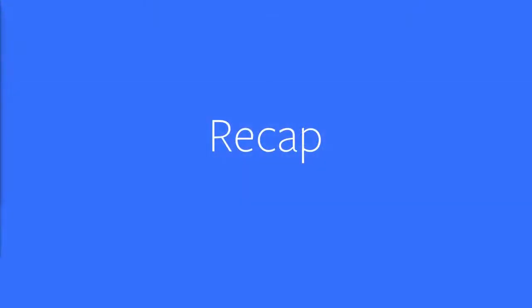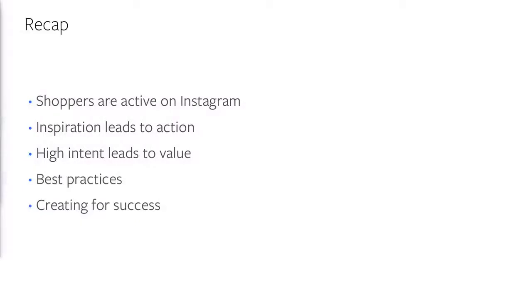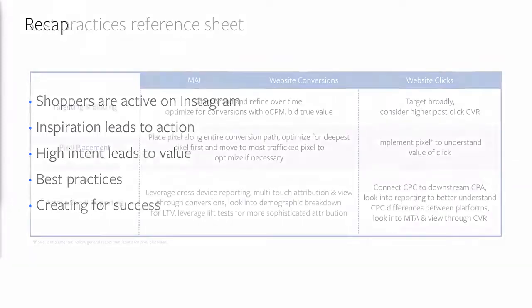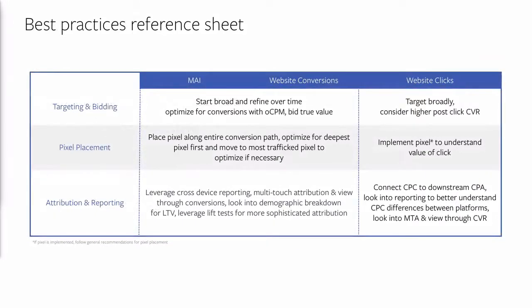Before Q&A, let's recap what we've shared today. We gave you an update on performance marketing on Instagram — shoppers are active on Instagram, 60% of people learn about products and services on Instagram, and 75% take action after being inspired by a post. Businesses are and always have been a natural part of the community. We talked about high intent when people click on Instagram ads and how product enhancements are driving more performance. And we introduced the latest best practices for getting the most out of your performance campaigns, including creative best practices for driving action.